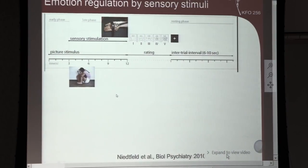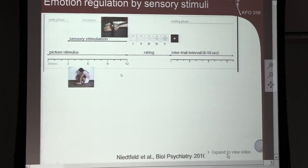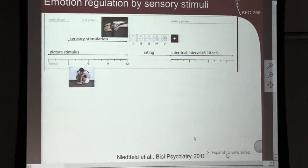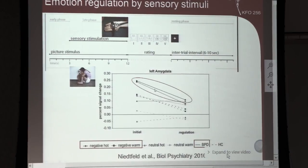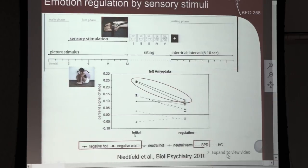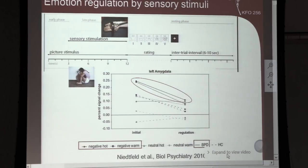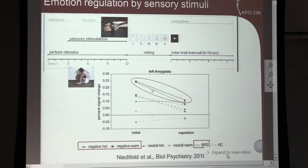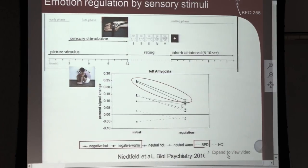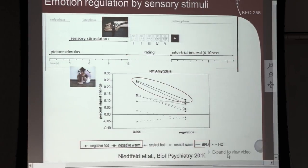We combined these methods in a study done together with Sabine Herpertz, where we first showed pictures for a few seconds and then added pain stimuli. In the initial phase, you can see higher values of amygdala activation as in previous studies — an overactive amygdala. But with pain in the regulation phase, the amygdala activation goes down to normal levels. This is another hint at the emotion regulation mechanism through painful stimuli.